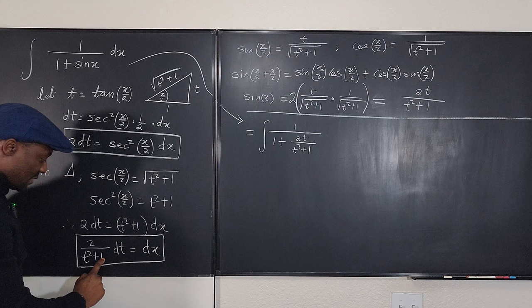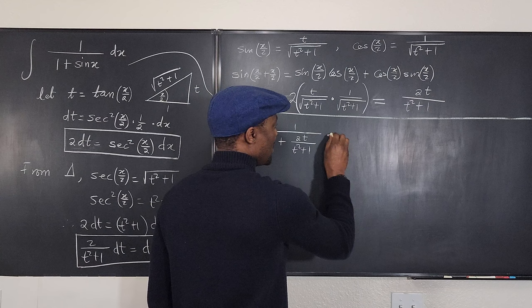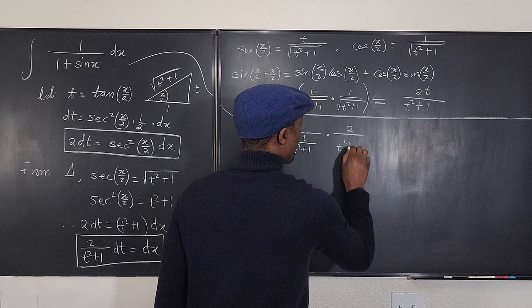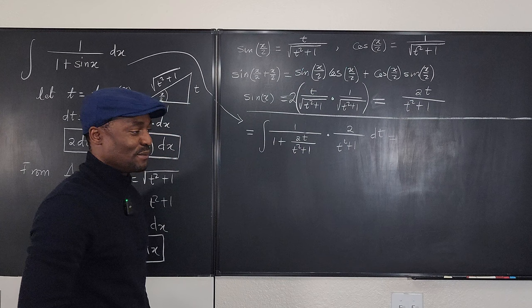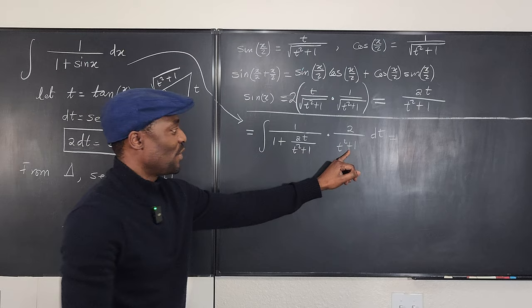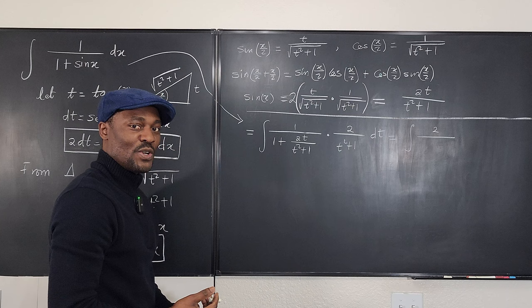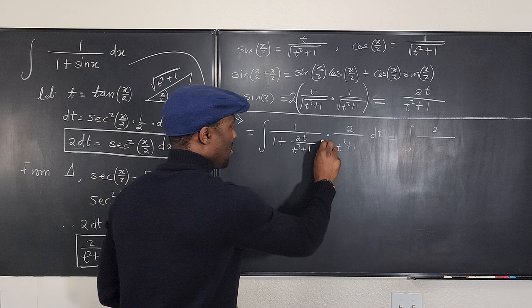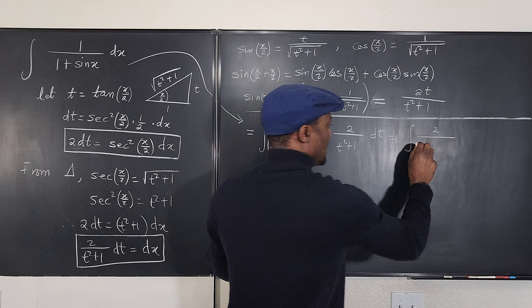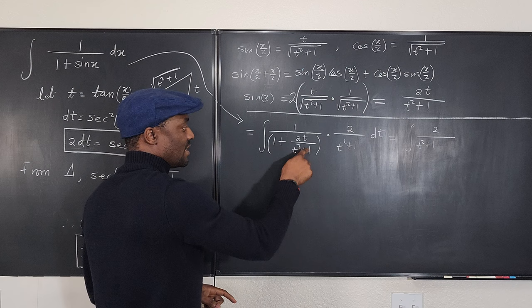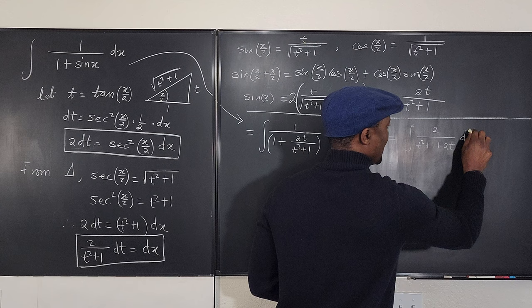So we have the integral of 1 over [1 plus 2t over (t²+1)], times 2 over (t²+1) dt. The t squared plus 1 in the denominator will multiply through: t squared plus 1 times 1 gives t squared plus 1, and it cancels with the denominator of 2t, leaving t squared plus 1 plus 2t in the denominator.